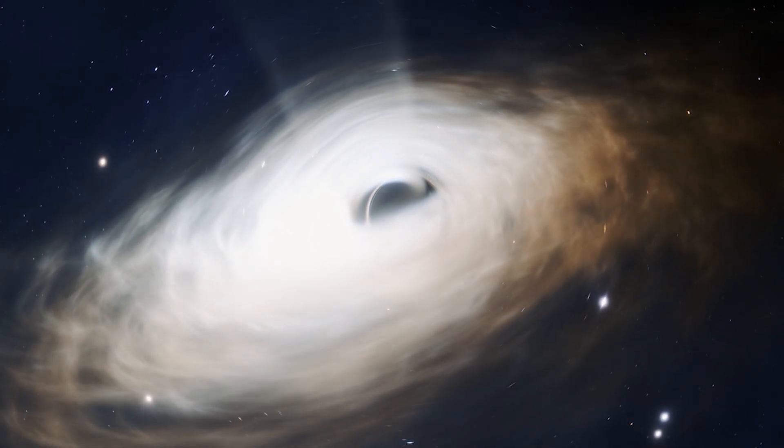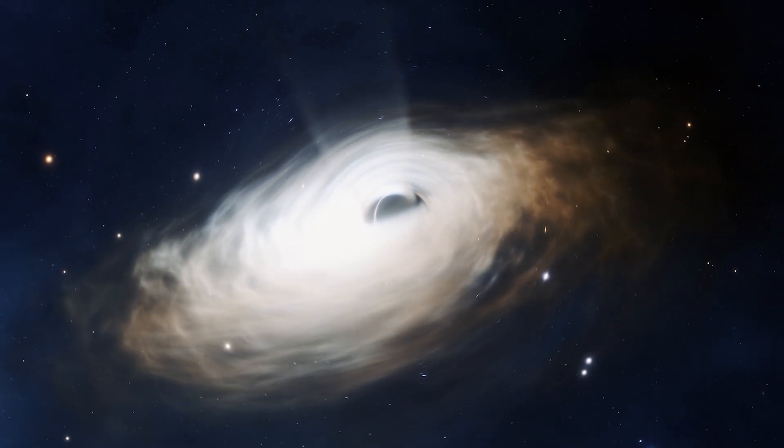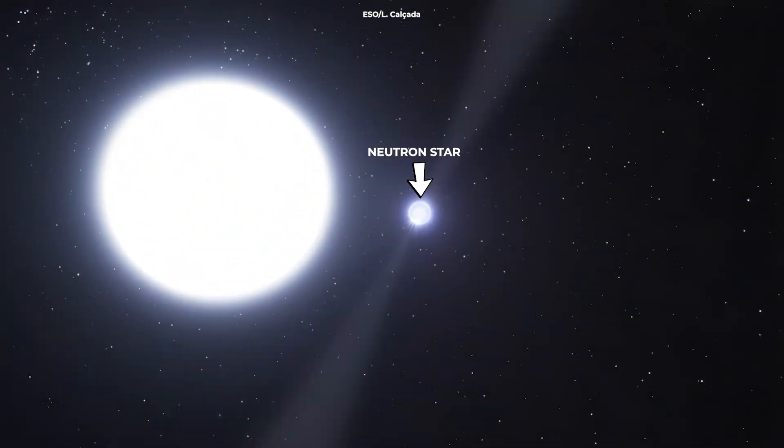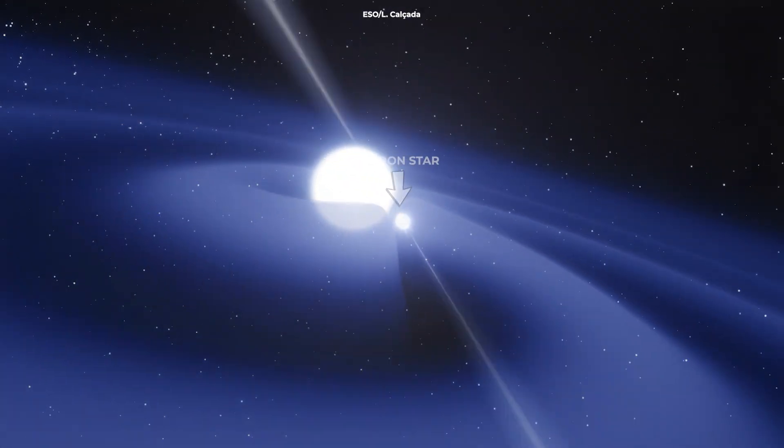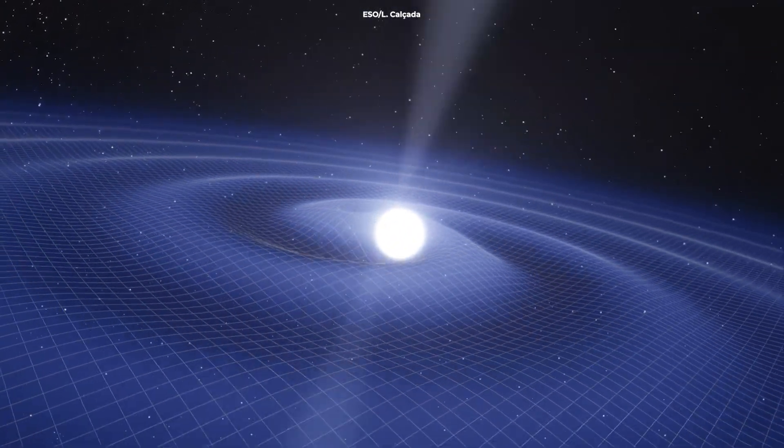Black holes aren't the only places in the universe where time slows down, though they're definitely the most extreme. Another place where you can find serious time dilation is near neutron stars. Neutron stars are the remnants of massive stars that have exploded into supernovae.